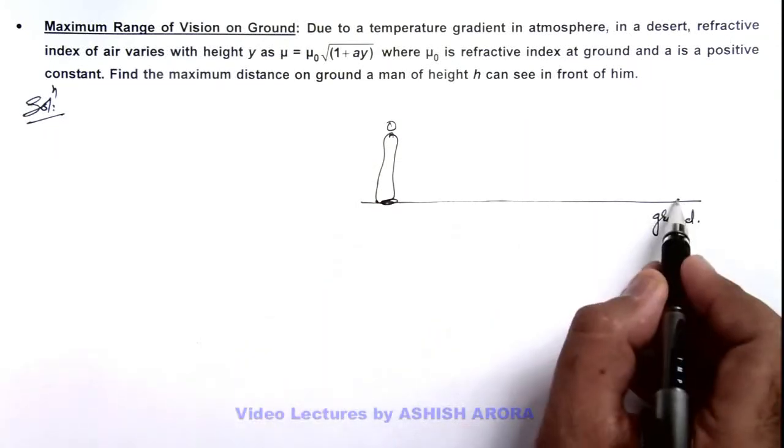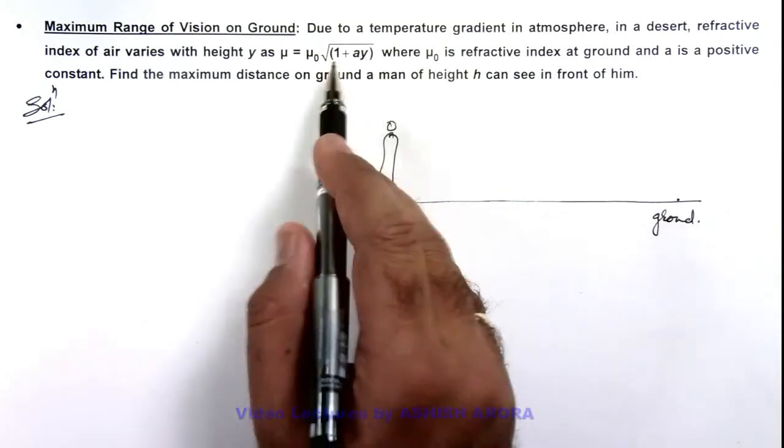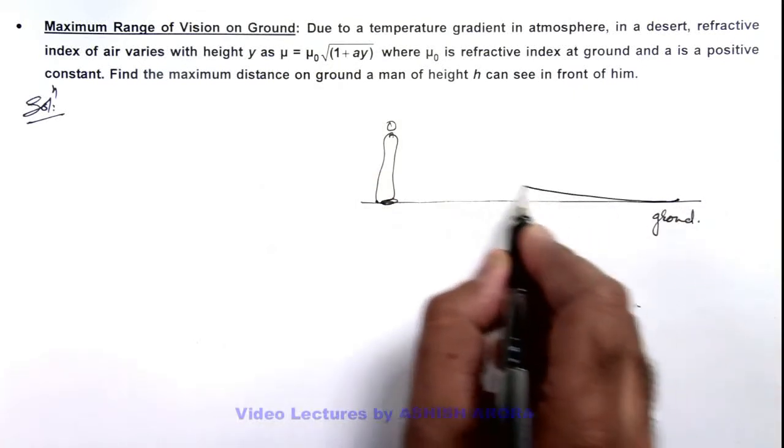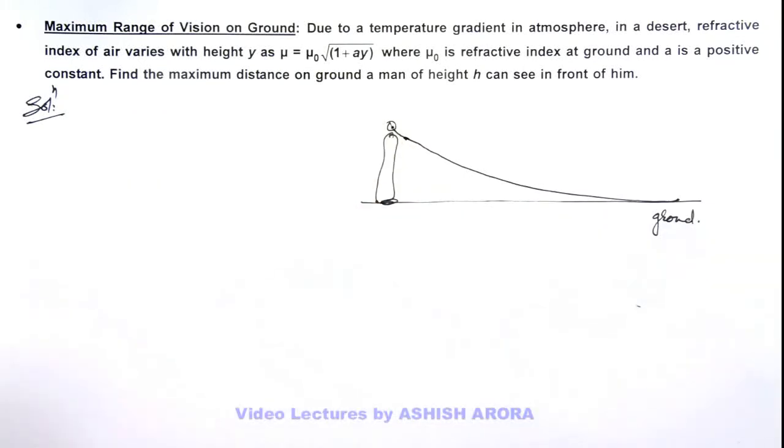Then, as it grows up in altitude, it'll bend towards normal as refractive index is increasing with height. So this would be the path of light ray with which it'll enter into the eye of this man.